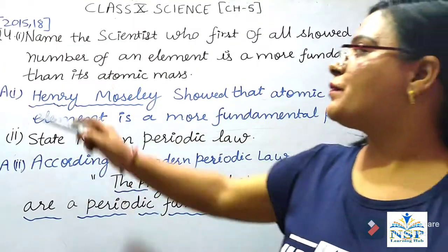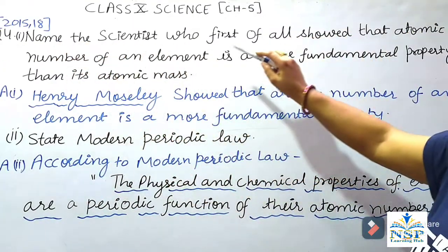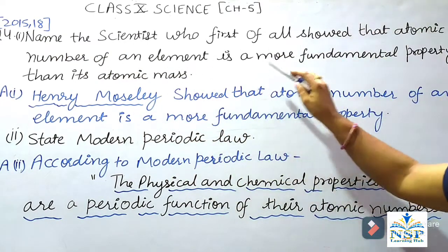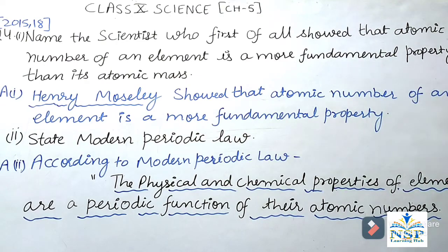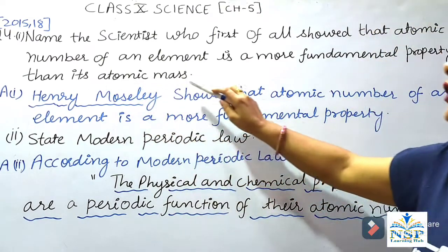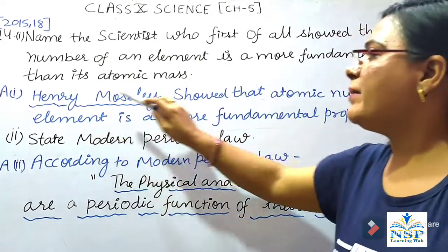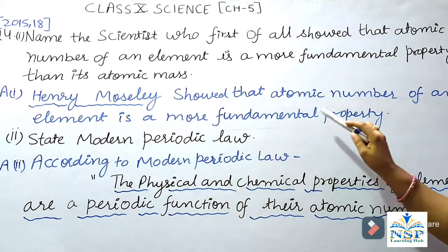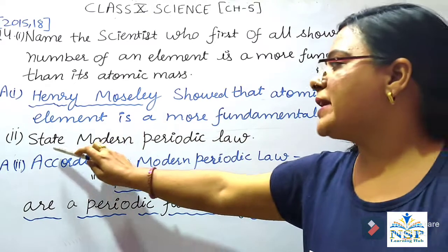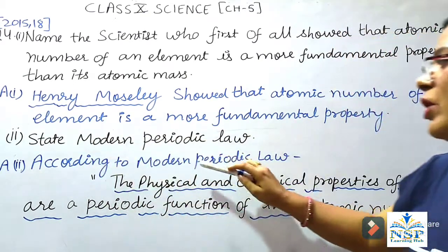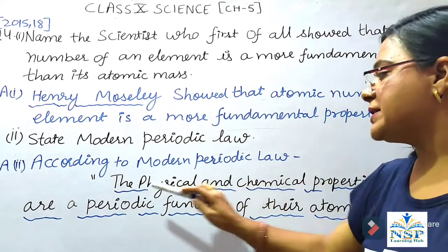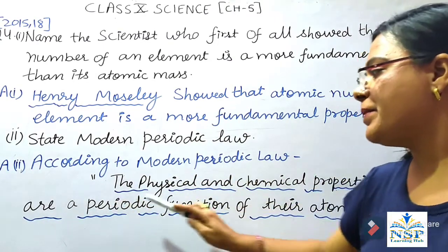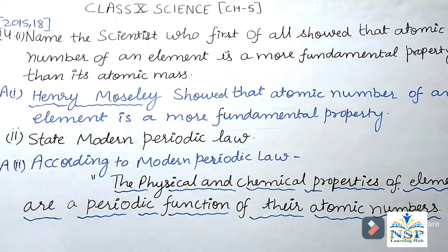Question No. 4: Name the scientist who first showed that atomic number of an element is a more fundamental property than its atomic mass. Henry Moseley showed that the atomic number of an element is a more fundamental property. State Modern Periodic Law: according to Modern Periodic Law, the physical and chemical properties of an element are the periodic function of their atomic numbers.